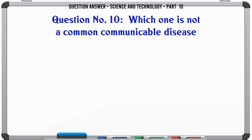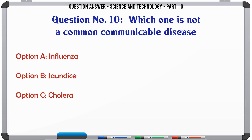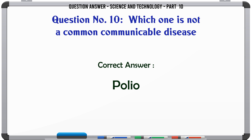Which one is not a common communicable disease? A. Influenza. B. Jaundice. C. Cholera. D. Polio. The correct answer is Polio.